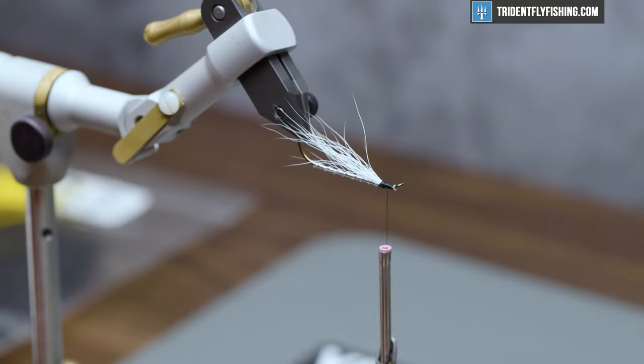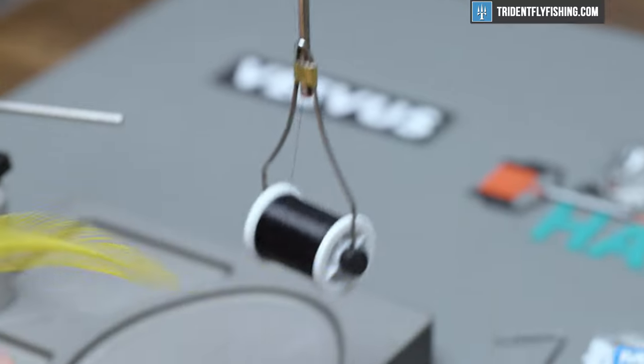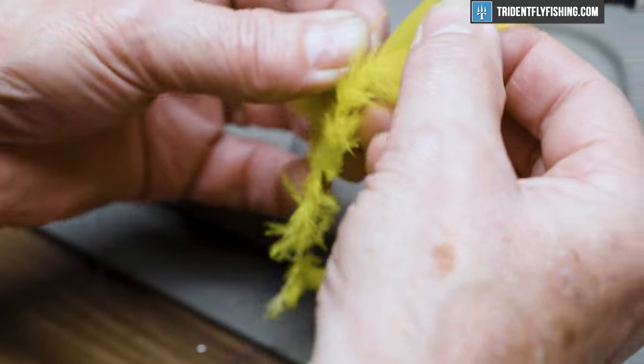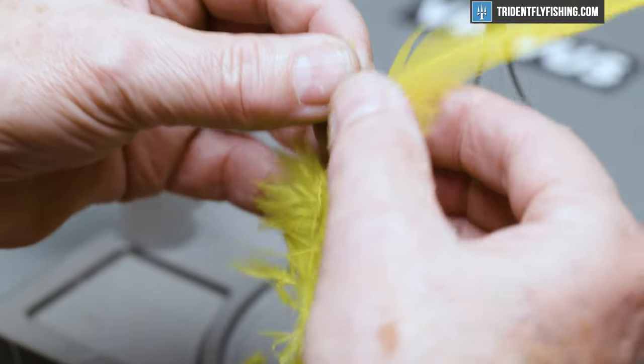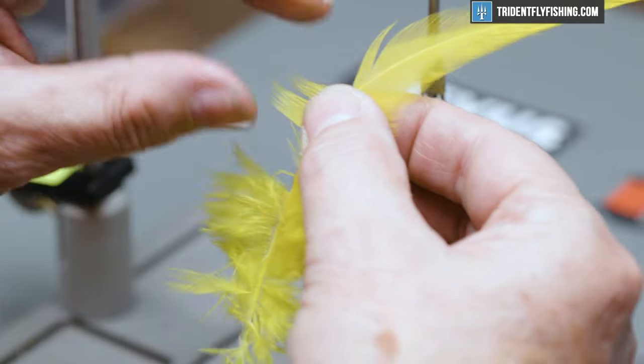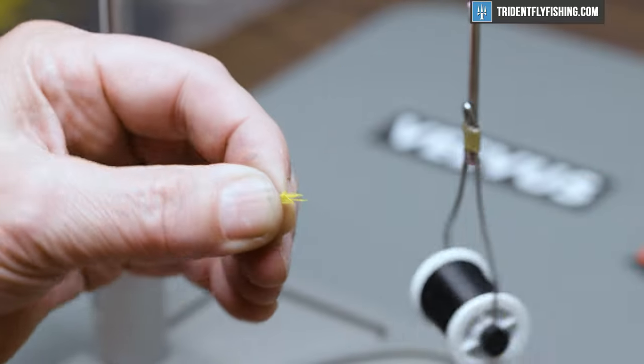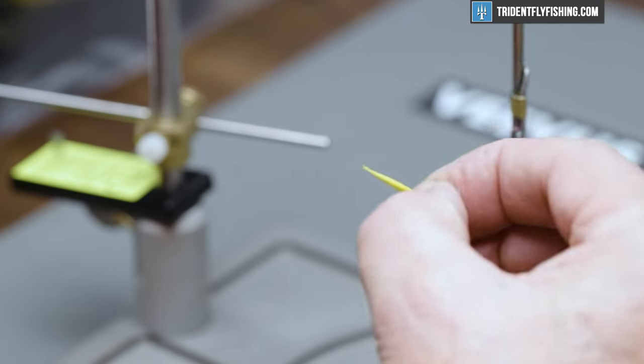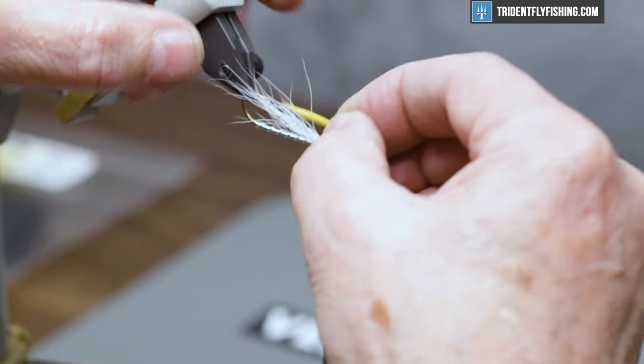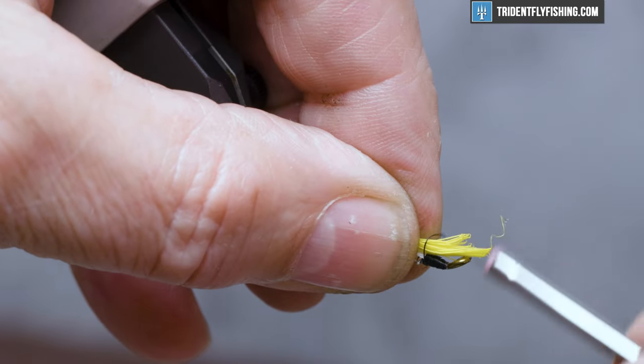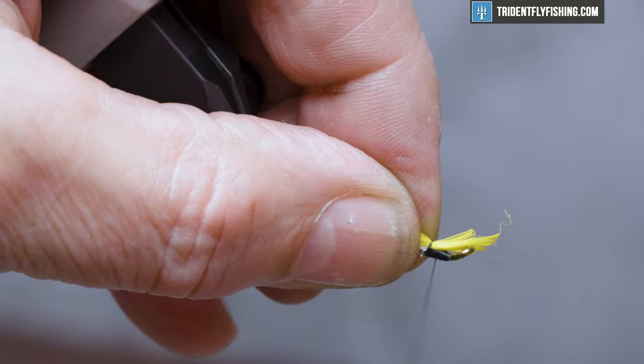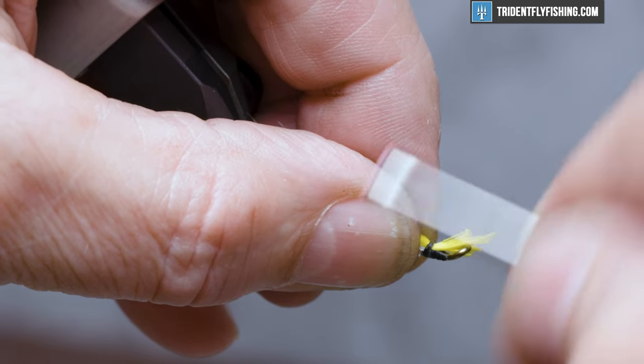Next we're going to tie in our throat and that's going to be some yellow saddle hackle fibers. So we'll pull some fibers out to even out the tips and strip those away. We want these to extend about halfway down the shank of the hook, no more than that. Tie those in right on top of the white bucktail.